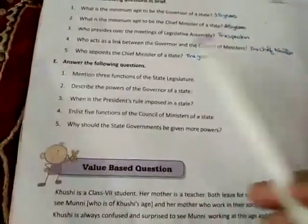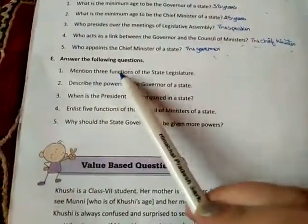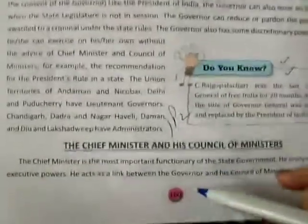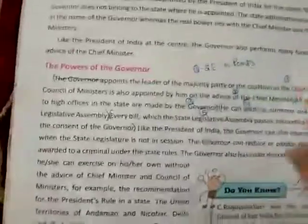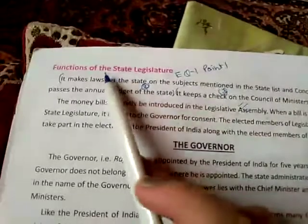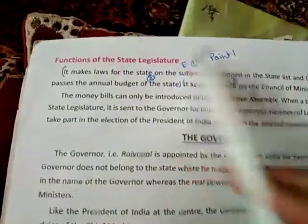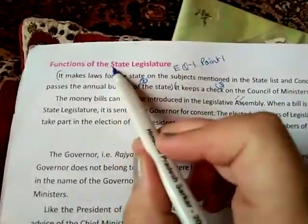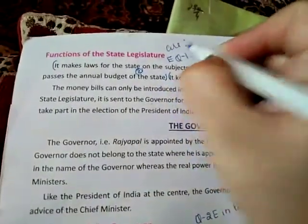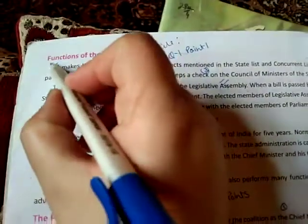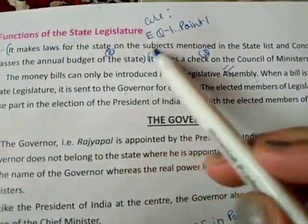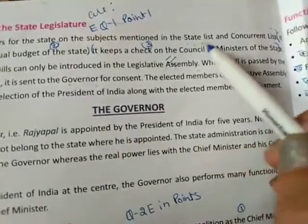Now part E. E1: Mention three functions of the state legislature. Come to page number 160, topmost paragraph — functions of the state legislature. Write 'Functions of the state legislature are:' with a colon sign. Point number 1: It makes laws for the state on subjects mentioned in the state list and concurrent list.